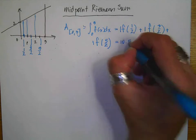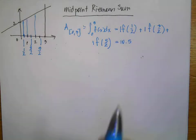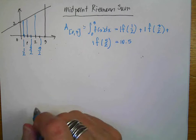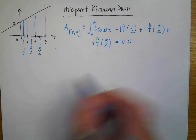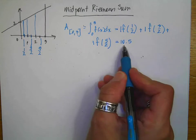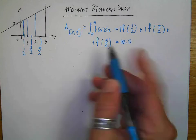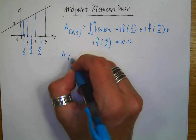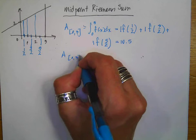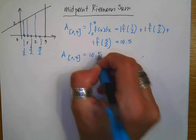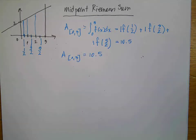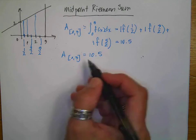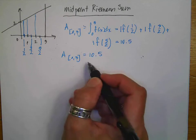This is my midpoint approximation. If I put those values in my calculator, I get 10.5 — and remember, the actual area was 10.5. So this is a really accurate approximation. The area from 0 to 3 is going to be 10.5.